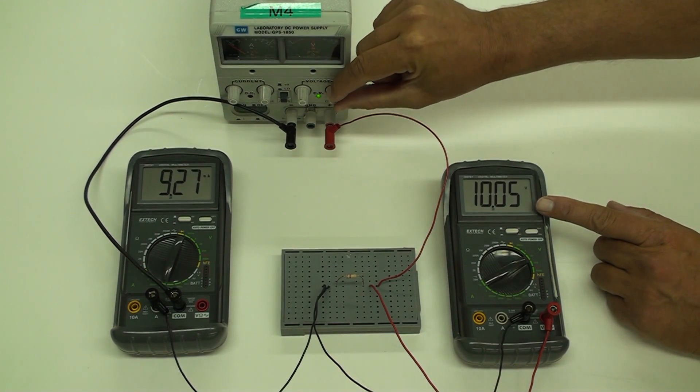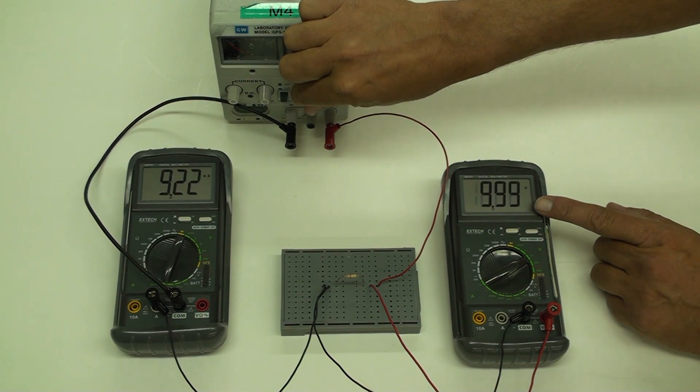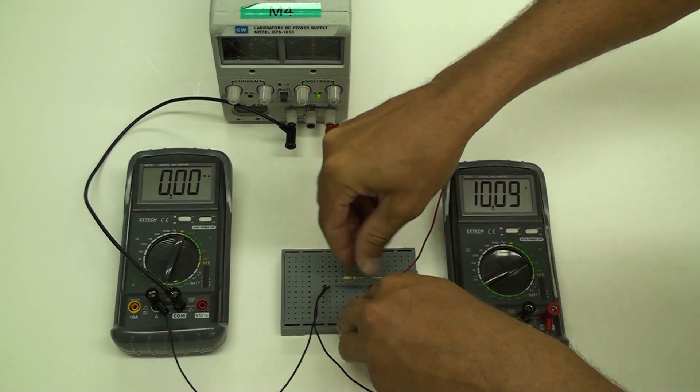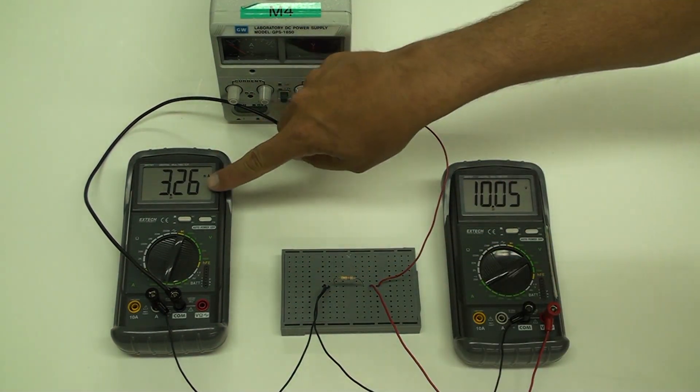Turn the voltage to precisely 10 volts and measure the current. Then swap resistors, keep the voltage at 10 volts, and measure the new current.